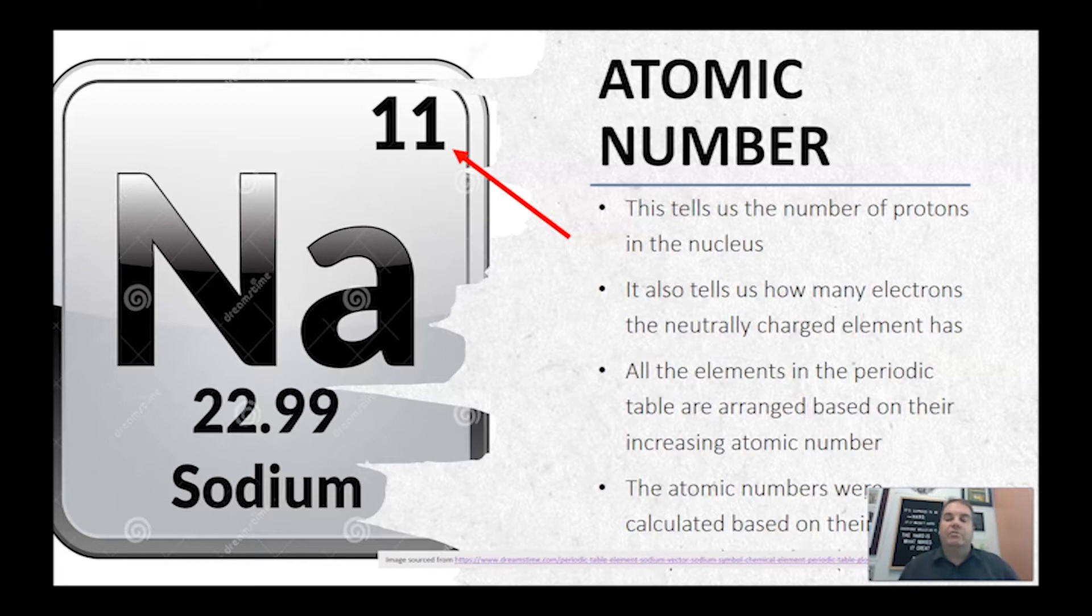So it has no charge. That's what we call a neutrally charged element. All the elements in the periodic table are arranged based on their increasing atomic number. But you'll also notice there's another number on the periodic table when you're looking at an element as well. So that was the atomic number.